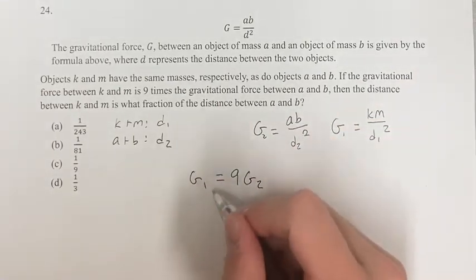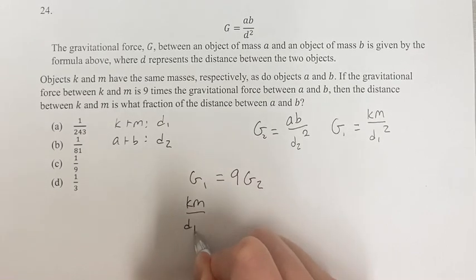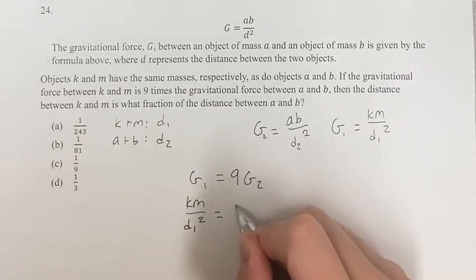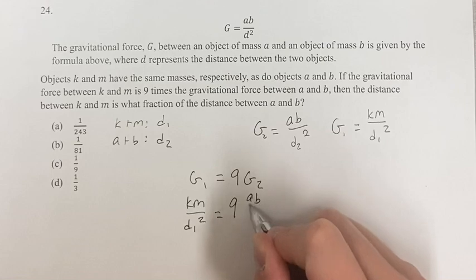So we have for G1, this is equal to KM over D1 squared, is equal to nine times AB over D2 squared.